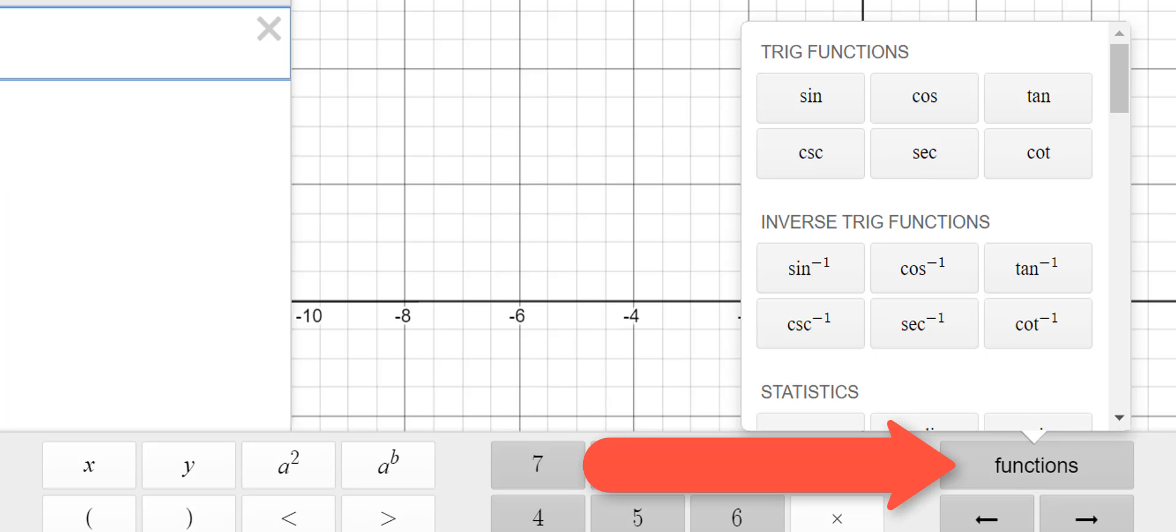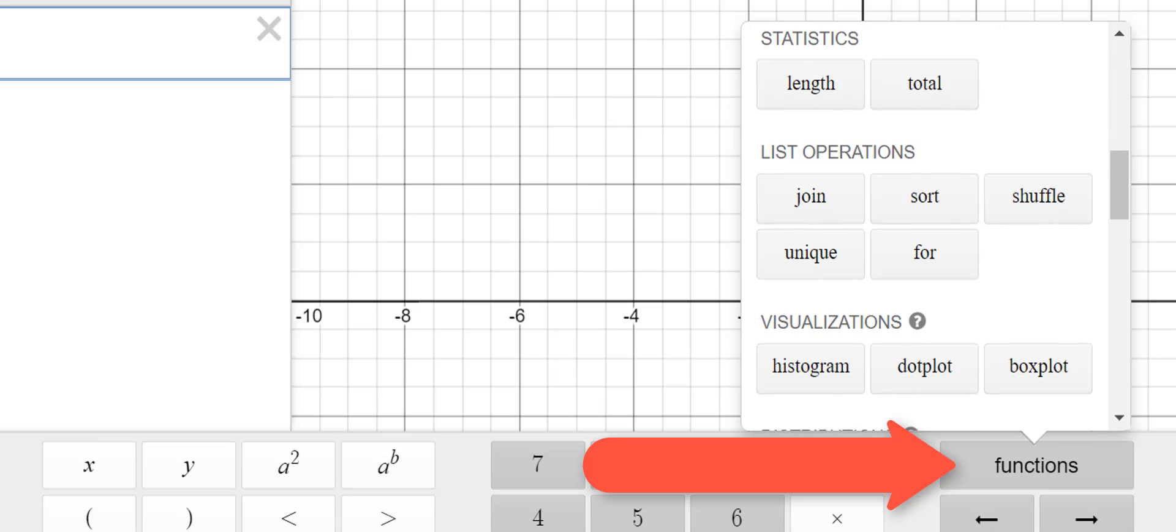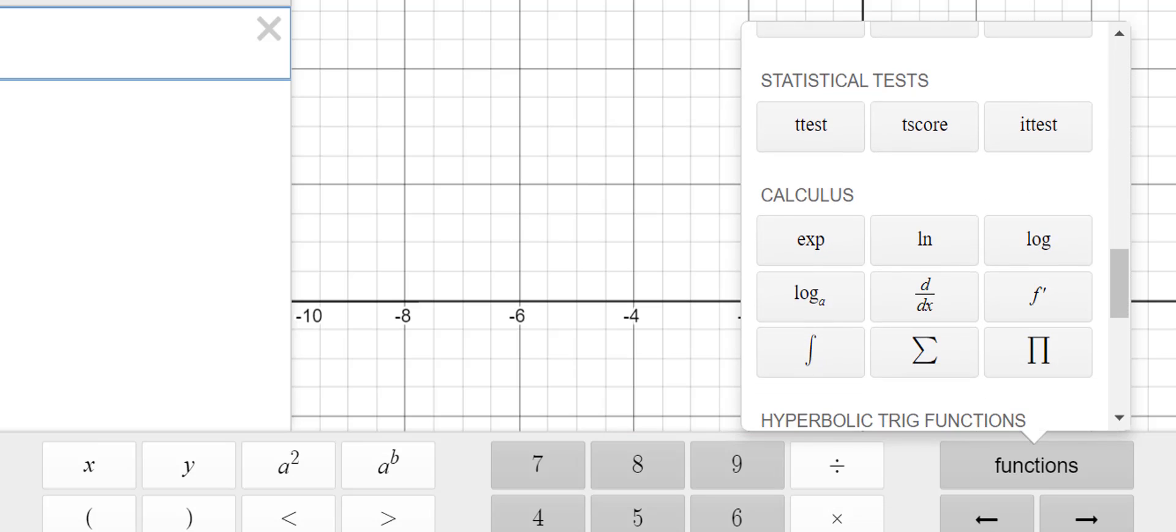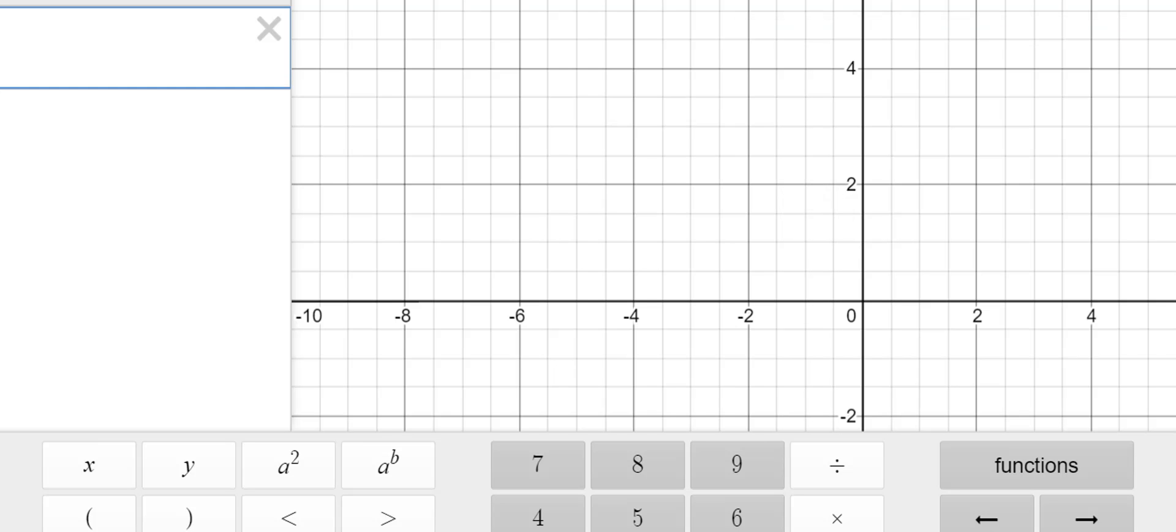And then the function, so this was recently changed in Desmos, so now you have to scroll all the way down to where calculus is. You'll see that very first thing right there, log of a underneath the exp and that little funky symbol, which is an integral symbol. So you choose log base of a.